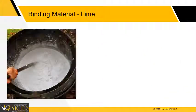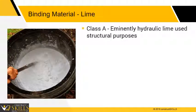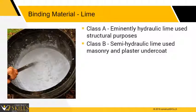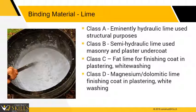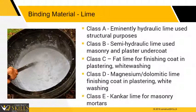Limes shall be classified in Class A, B, C, D and E categories. Class A is eminently hydraulic lime used for structural purposes. Class B is semi-hydraulic lime used for masonry and plaster undercoat. Class C is fat lime for finishing coat in plastering and whitewashing. Class D is magnesium or dolomitic lime for finishing coat in plastering and whitewashing. Class E is kunkara lime for masonry mortars.